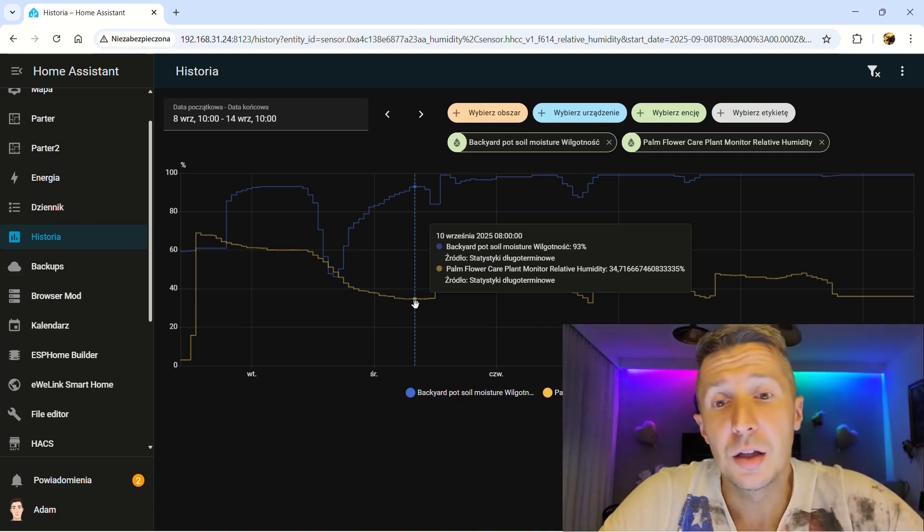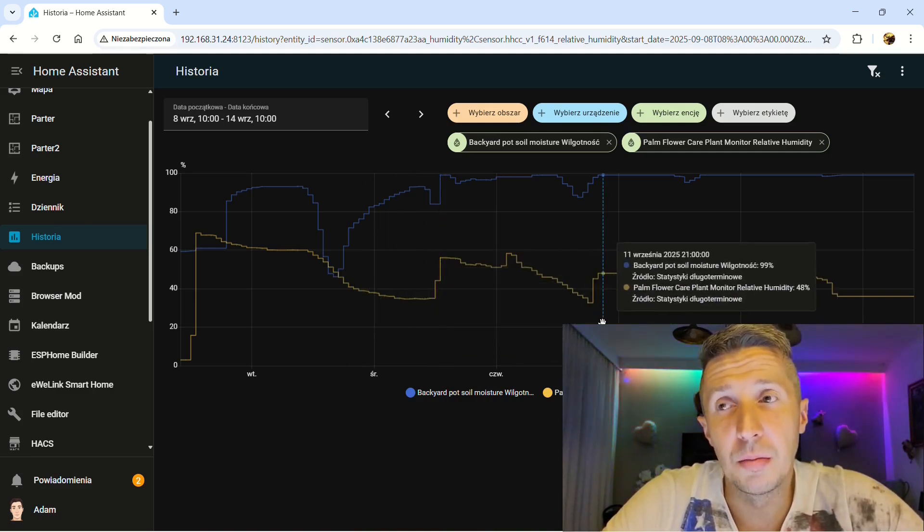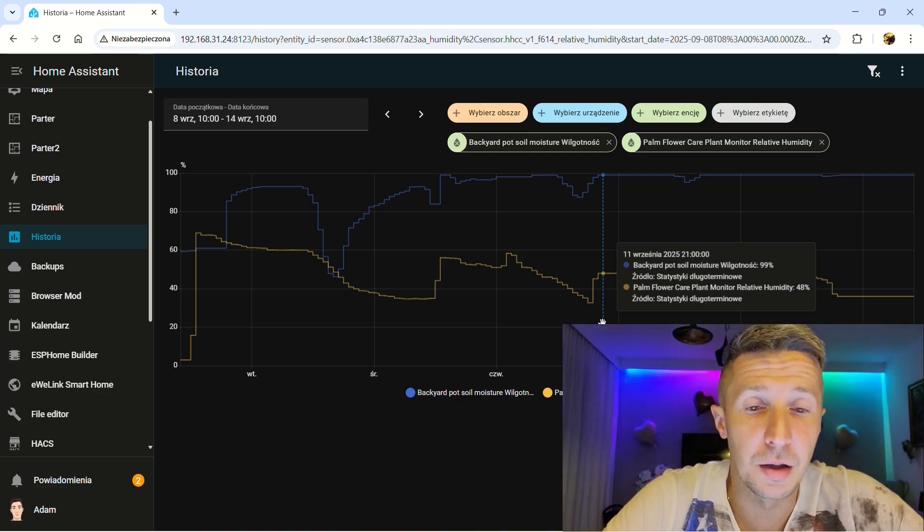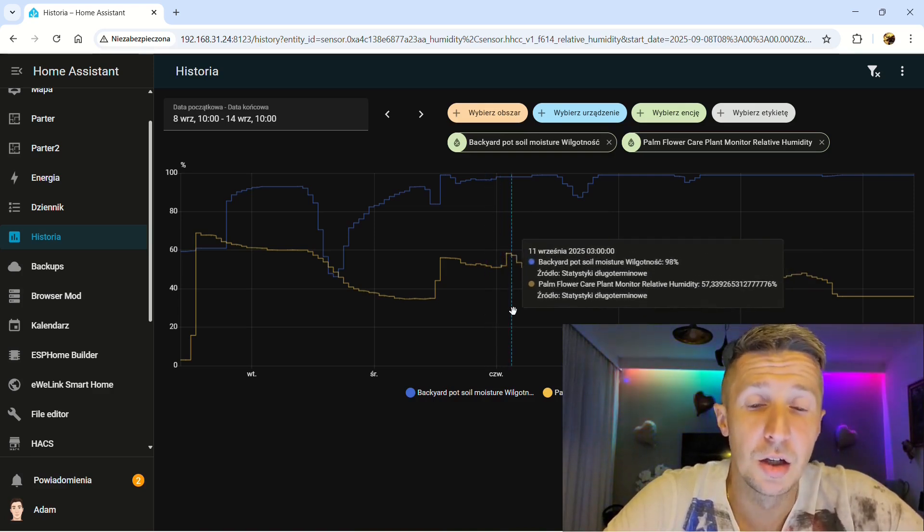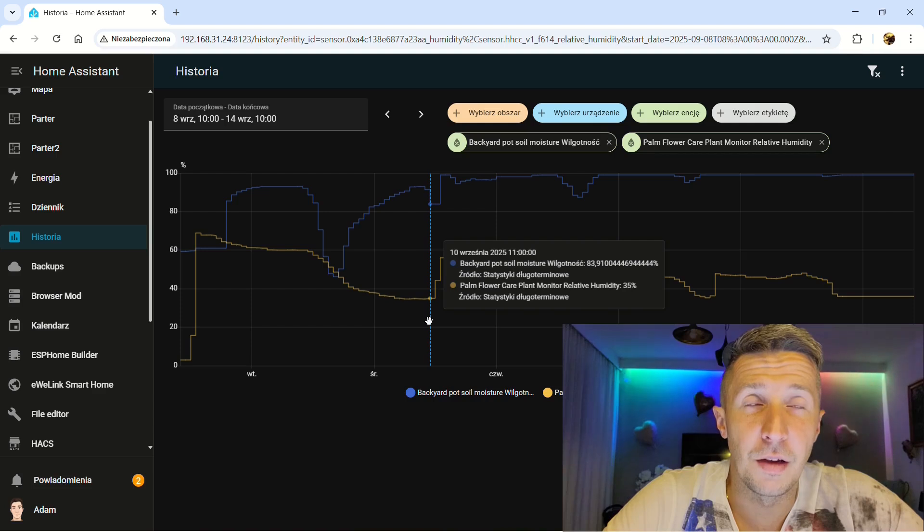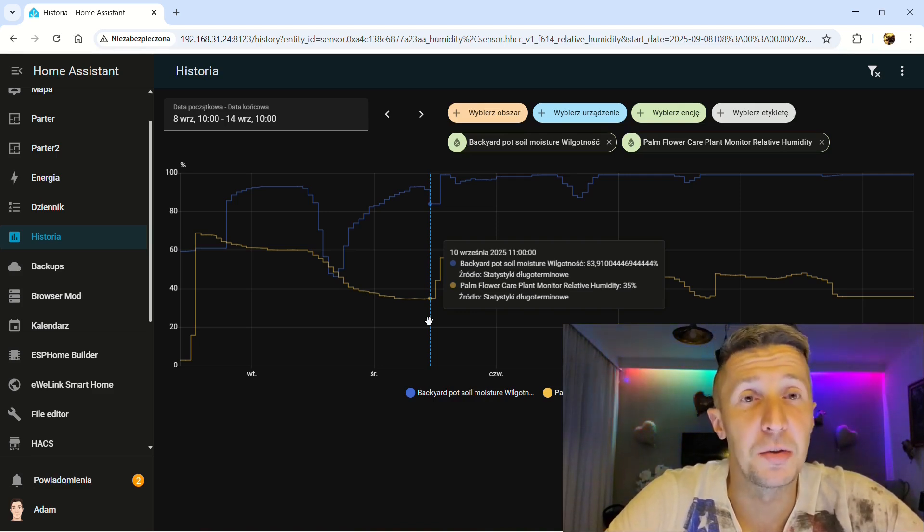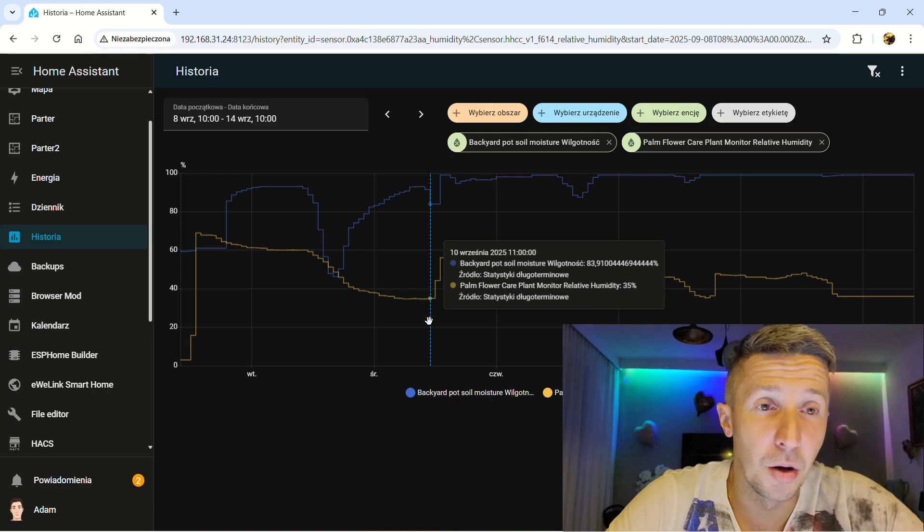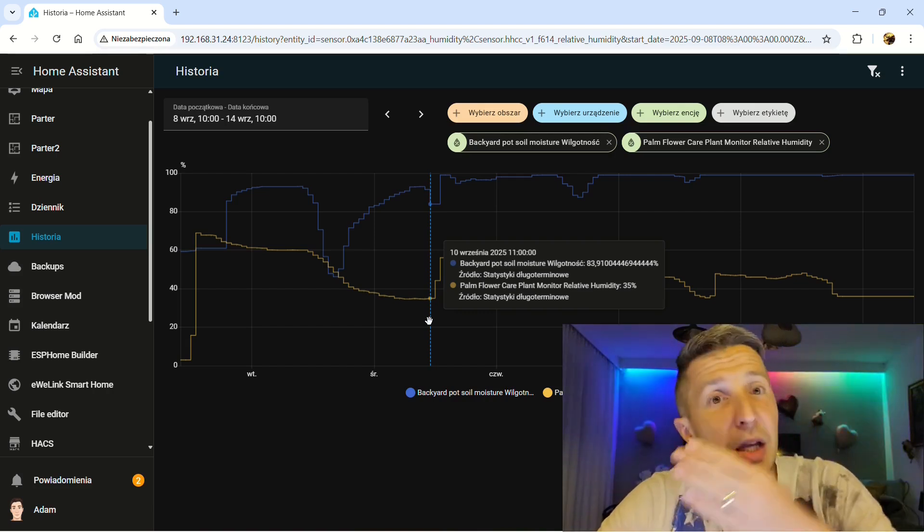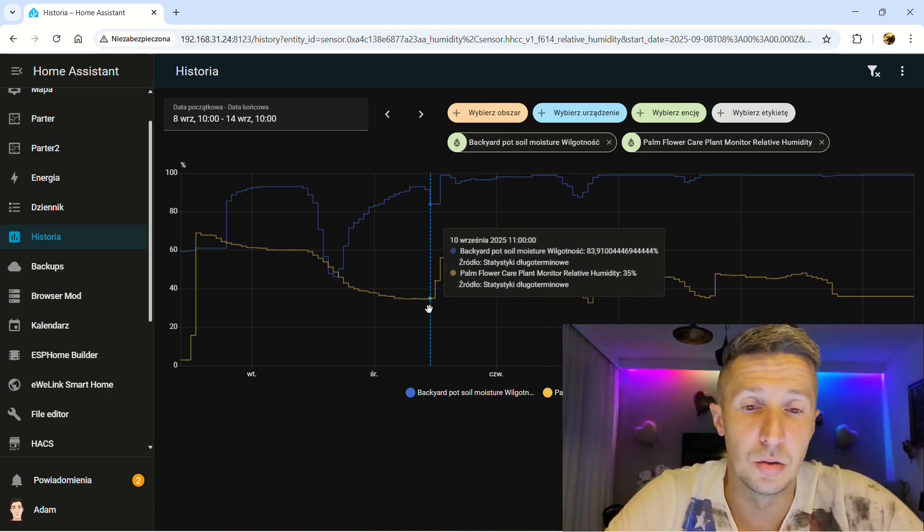So with Mi Flora, the readings are the average. If I would show you what really was happening - when I was watering the pot, then the Mi Flora was getting even 100% the moisture, but it was quickly dropping to this number, like you can see here.